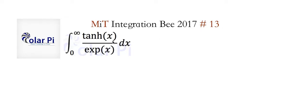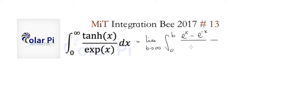Problem 13 — a very fun problem. tanh(x) is equal to (e^x minus e^(-x)) divided by (e^x plus e^(-x)). Proper grammar for an improper integral would have us write the limit as b goes to infinity, and then integrate from zero to b. So tanh(x) equals that expression right there.